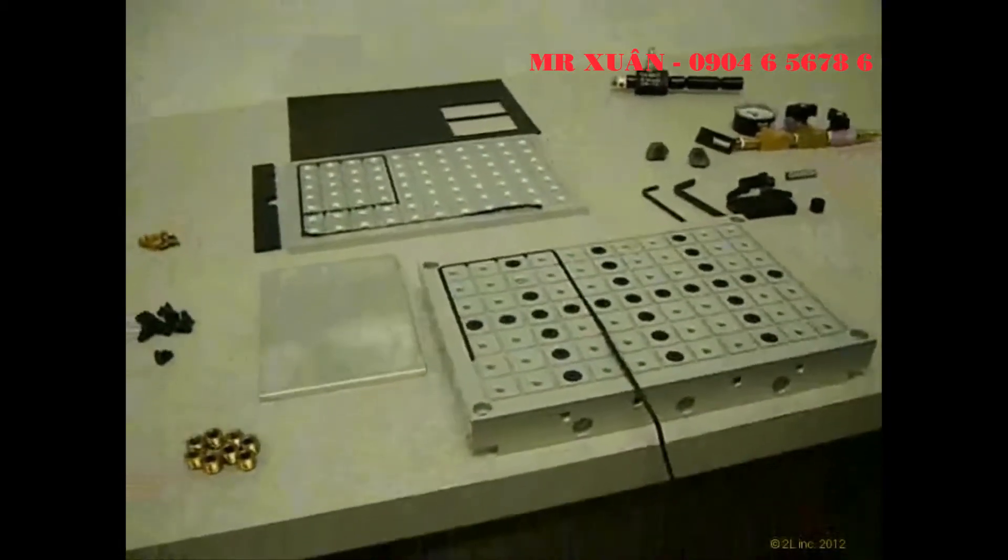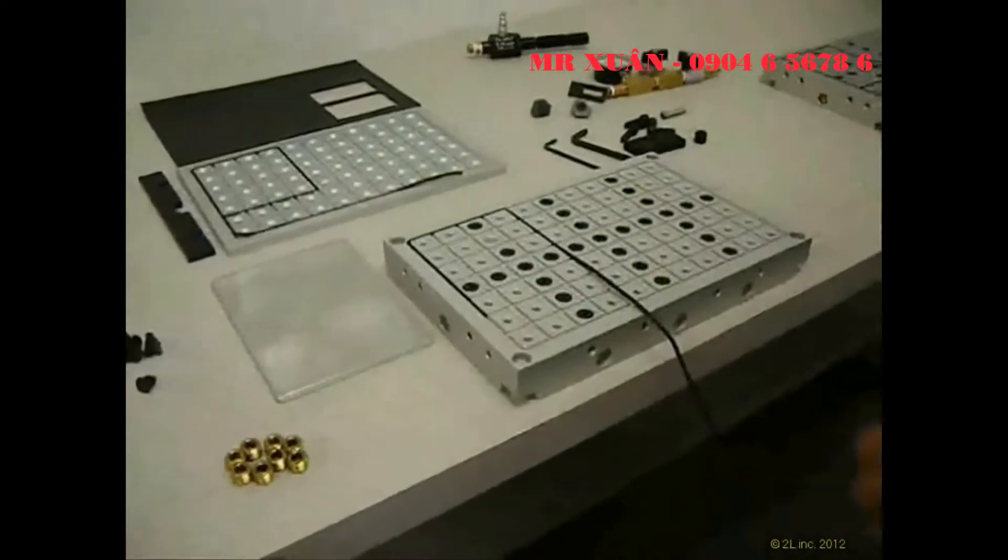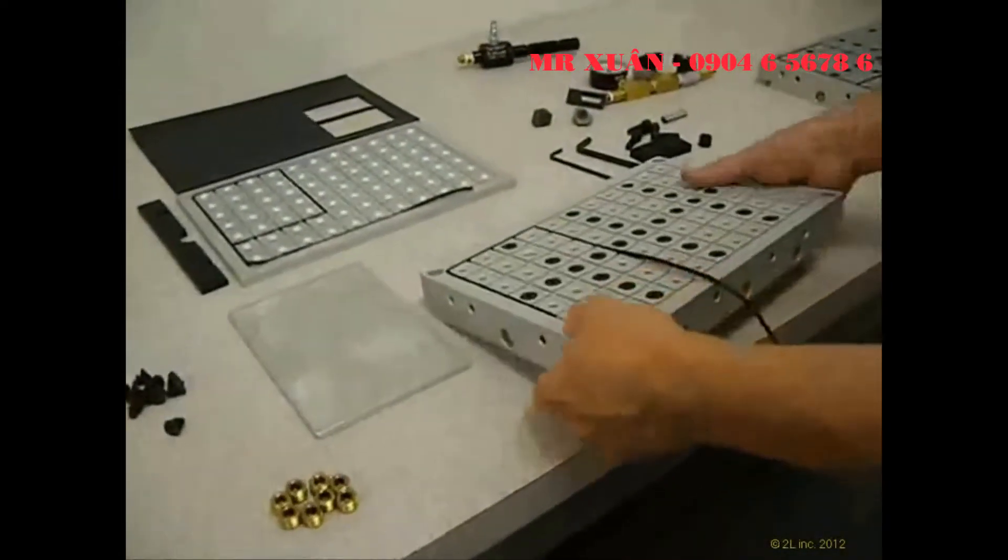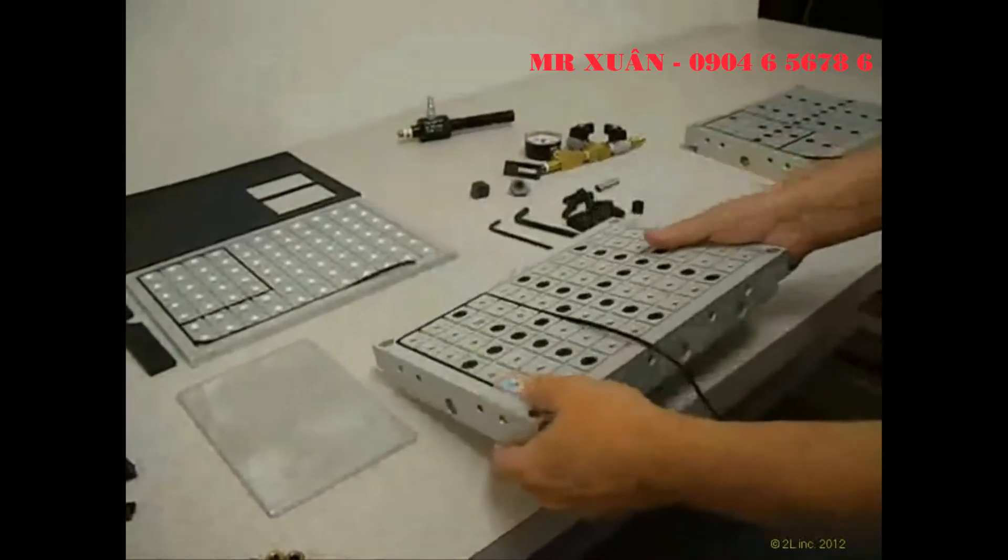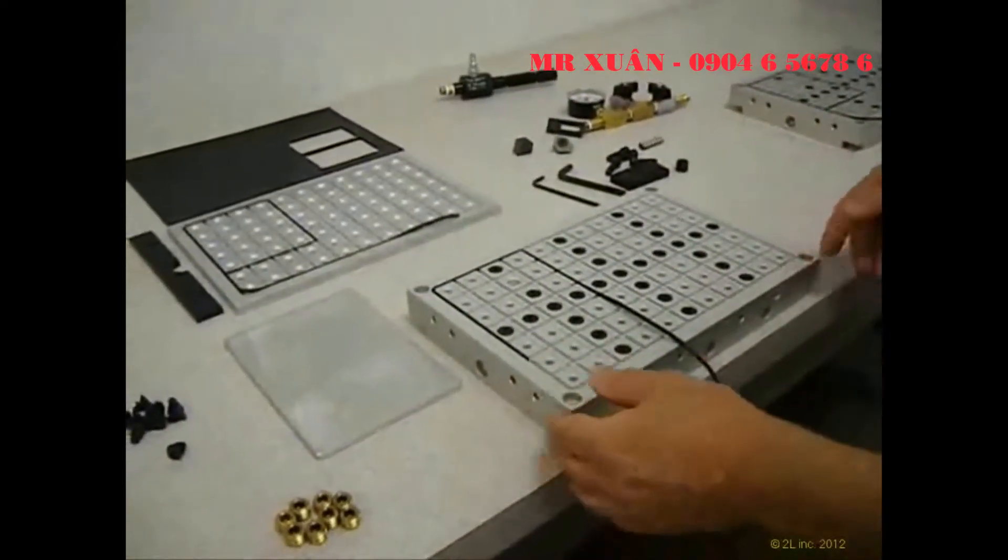Okay, we're going to give you a quick demonstration on how to assemble and use the 2L vacuum chuck system. First, it's an 8 inch by 12 inch standard size vacuum chuck plate. It's a modular system. You can add multiple plates together to make bigger systems if you need to.